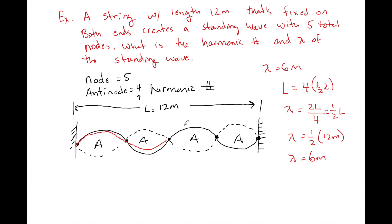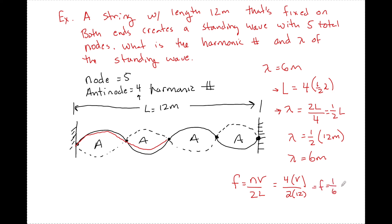Those are the types of questions you'll see with harmonic numbers — using the relationship for L and lambda to find frequency. If they ask for frequency: F equals NV over 2L, so with harmonic number 4 and L equal to 12, F equals 4V over 24, which is one sixth of V. We don't know V in this case, so at least we set an expression. Hope this helped — skip back and forth and review what you need. On the next video I'm going to talk about harmonic numbers inside tubes when it comes to sound. Hope you have an amazing day.